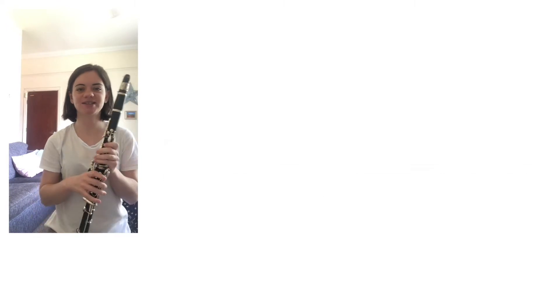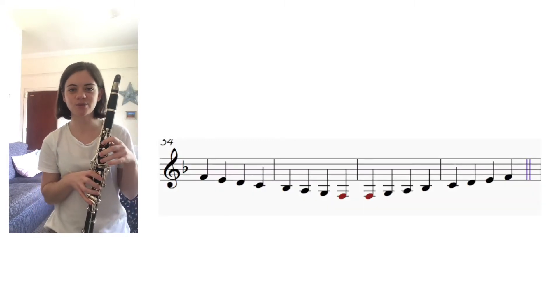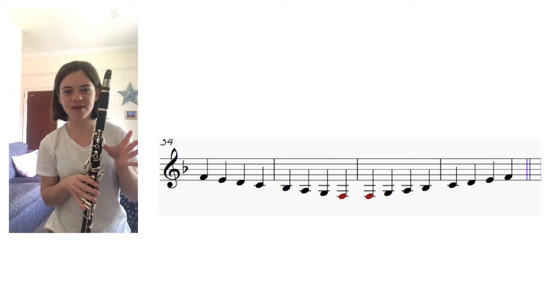Hi clarinets, Miss Mortimer here, and today we're going to have a look at Little Brown Jug. Let's start with an F major scale today, so this is on your grade 1 scales. We're going to go F, E, D, C, B flat, A, G...